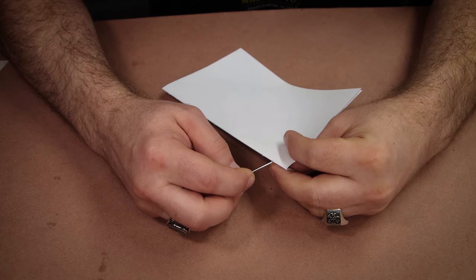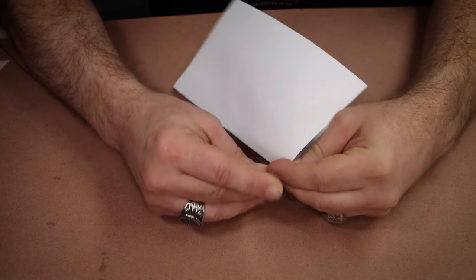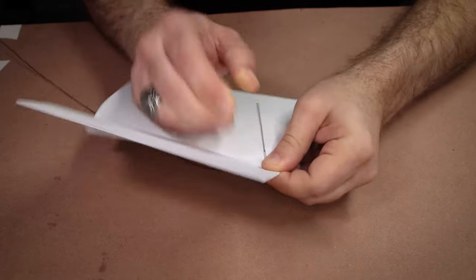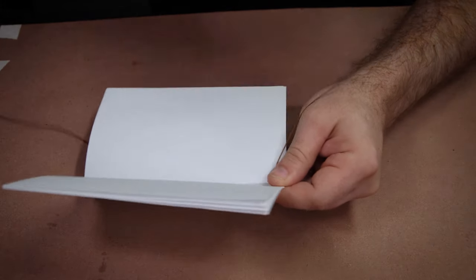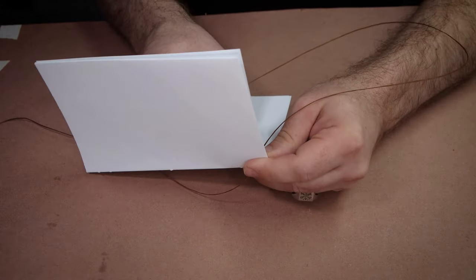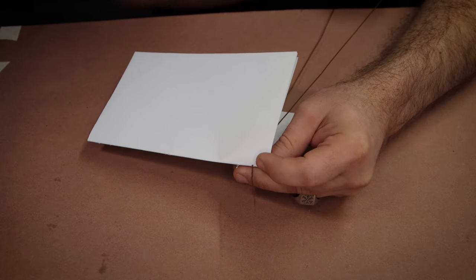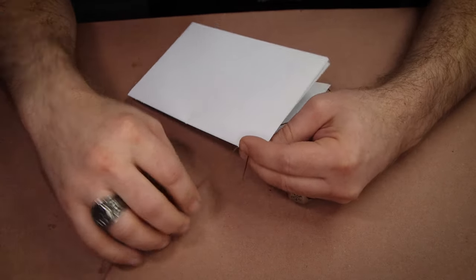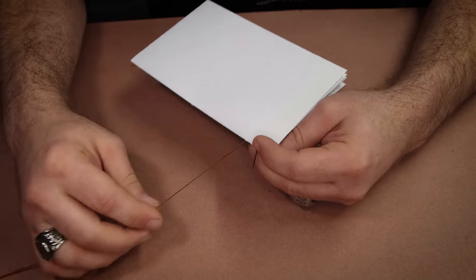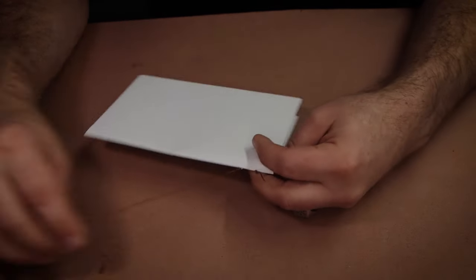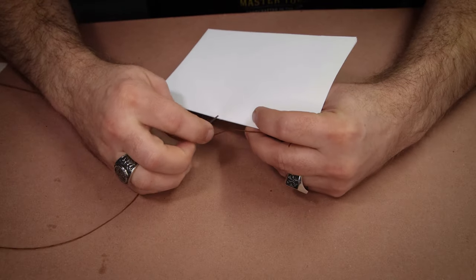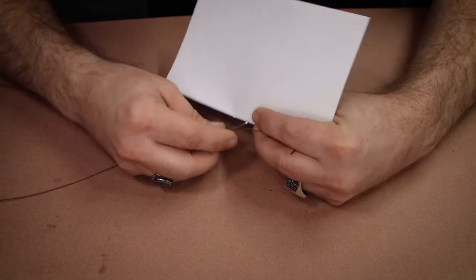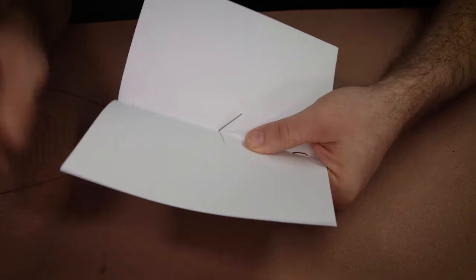So this stitch is called case binding. Now, you don't have to know what that means, just that it's an easy, clean stitch. We're going to start with one of the holes on either end of the signature. It doesn't matter. And we're going to start from the outside. Then we're going to pull that knot snug against the outside of the signature. Then we're going to work our way through the other holes one at a time with an in-out pattern.